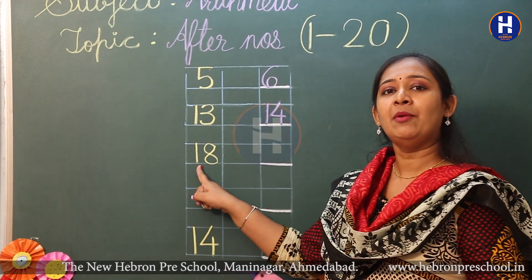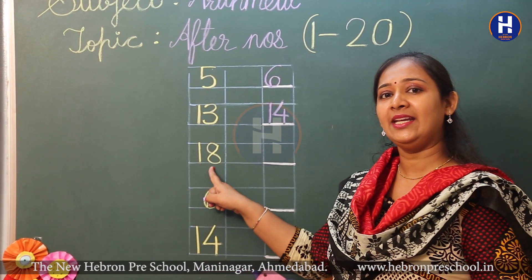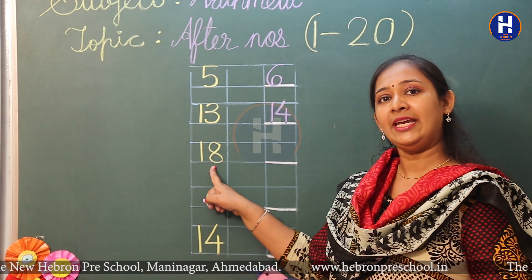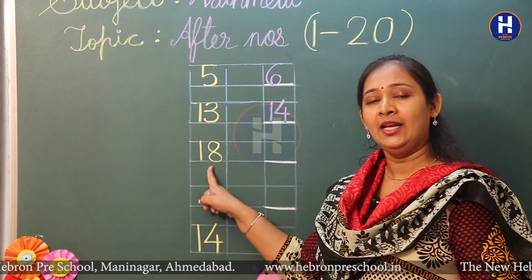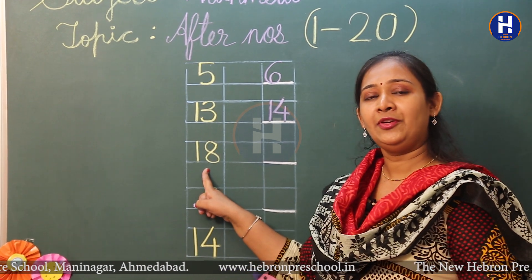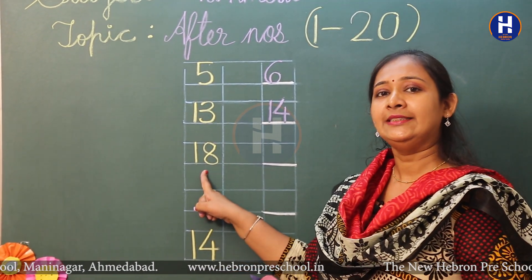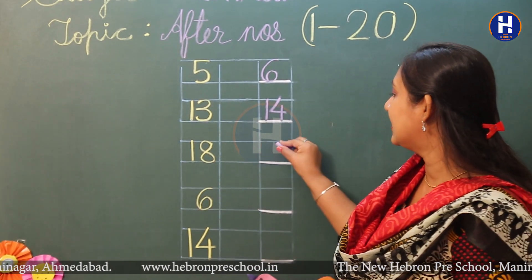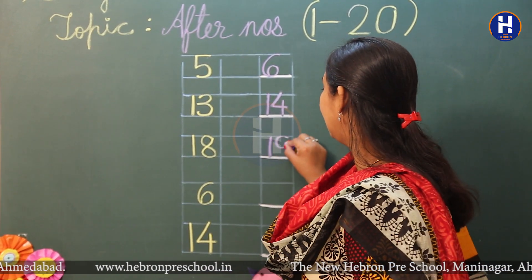This is number eighteen. So let's count till number eighteen: eleven, twelve, thirteen, fourteen, fifteen, sixteen, seventeen, eighteen. And the next number is number nineteen.